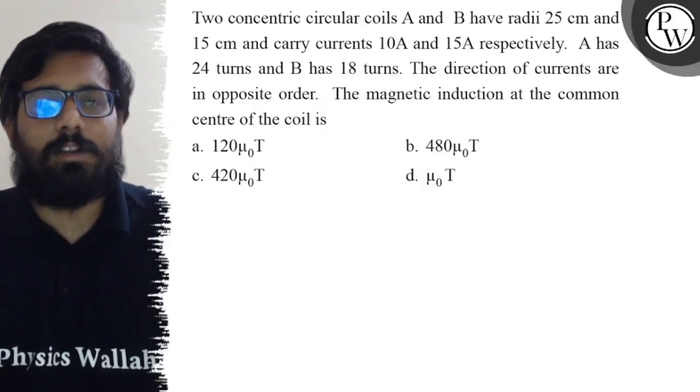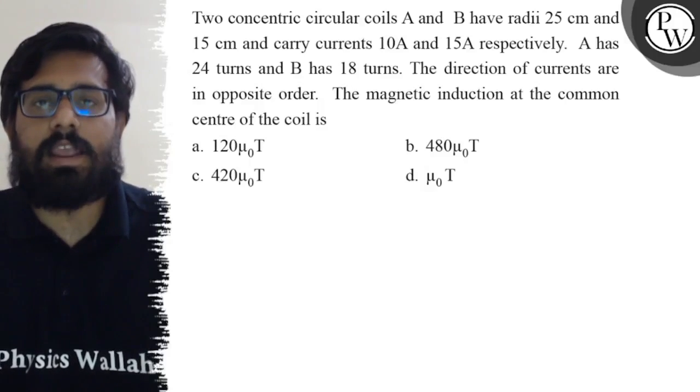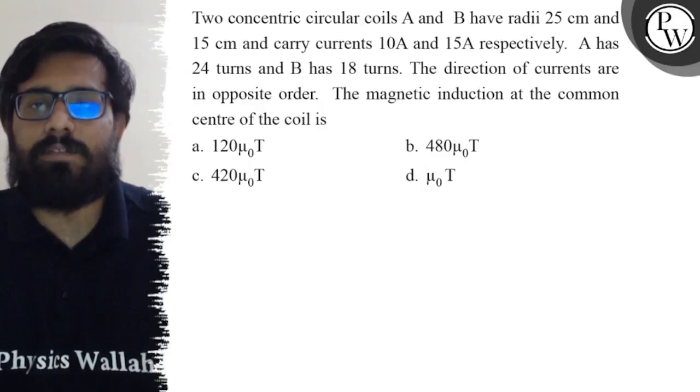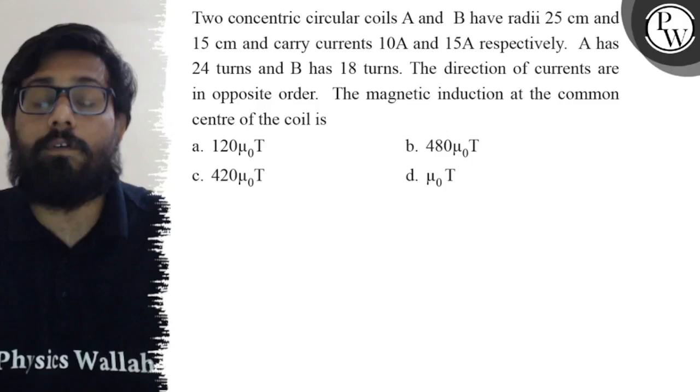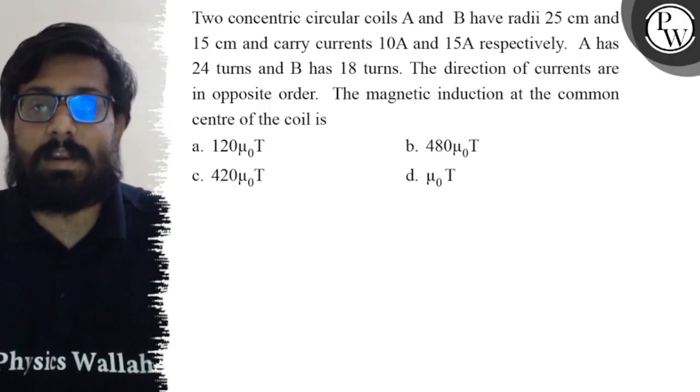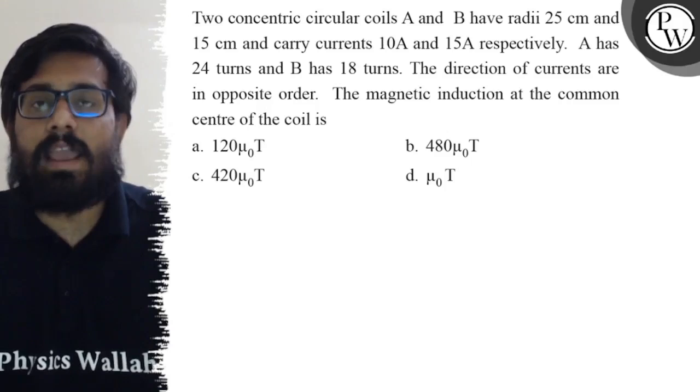Hello bachos, let's see the question. Two concentric circular coils A and B have radii 25 centimeters and 15 centimeters and carry currents 10 amperes and 15 amperes respectively. A has 24 turns and B has 18 turns.